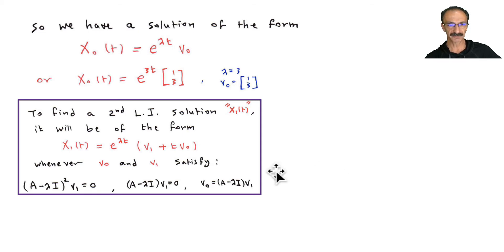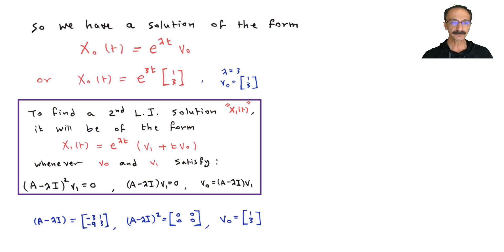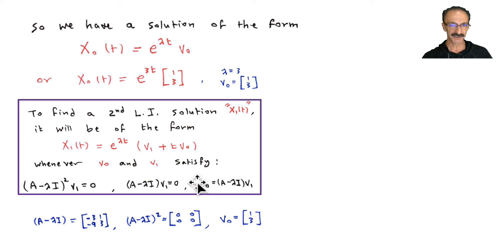It's like algebra steps you have to work through to target v_sub_0 and v_sub_1 that fit those three equations. I have two examples for this section. So far, (A - lambda*I) gives us one part and (A - lambda*I)^2 gives us the squared part — the math came out to zero, so that's not helping here. With v_sub_0 = [1, 3] substituted in, we can solve for v_sub_1.